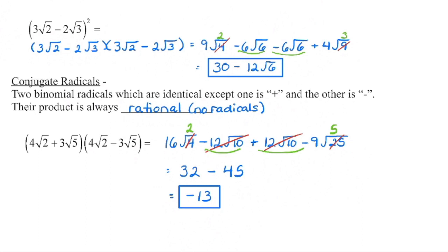One word of caution: conjugate radicals are not the same as a binomial squared. With conjugates — one plus, one minus — we end up with a rational solution. With a binomial squared, we will still usually have radicals in the final answer.